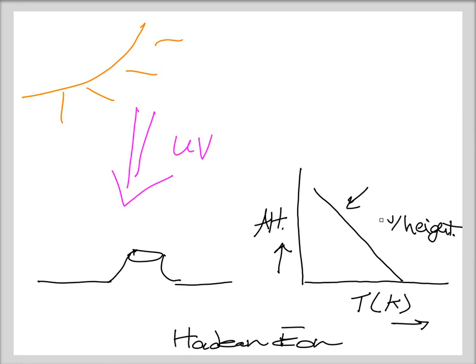We define the vertical structure of Earth's atmosphere on the basis of temperature changes. In the Hadean case we really don't have a change — just a steady, systematic decrease of temperature with height. What I'd like to do now is introduce the earliest appearance of an ozone layer.